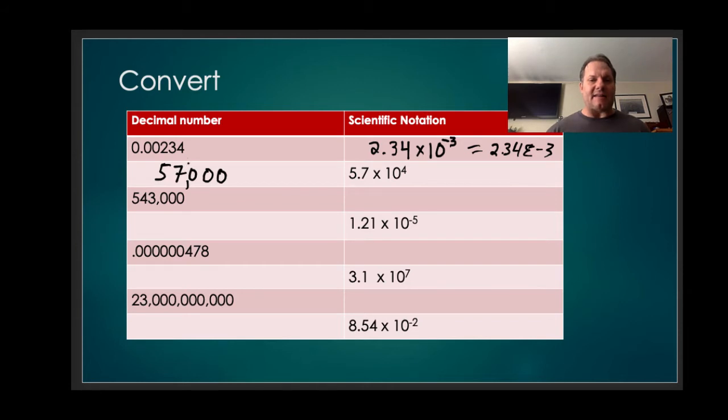Let's take a look at this. 543,000. So our first step, we're going to take the decimal and move it to create a number between 1 and 10. If we do that, we get 5.43. And then we ask ourselves, how many times did we move the decimal to get it there? We moved it five times.